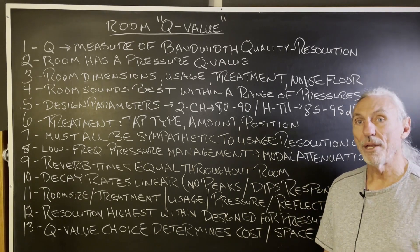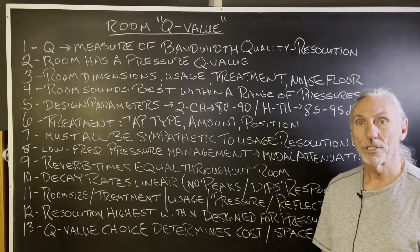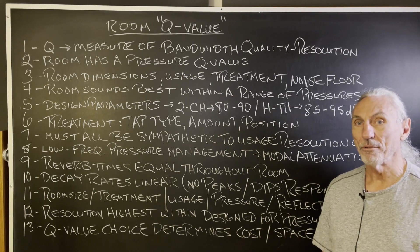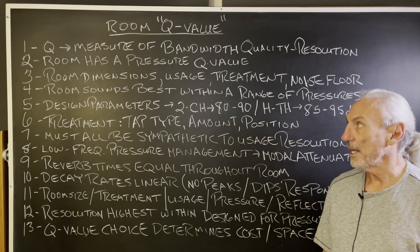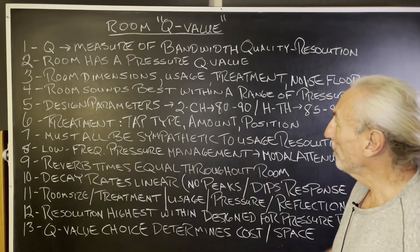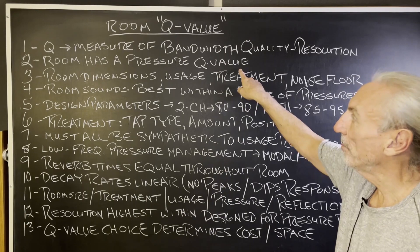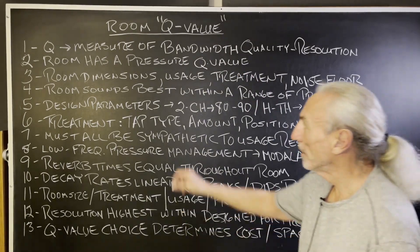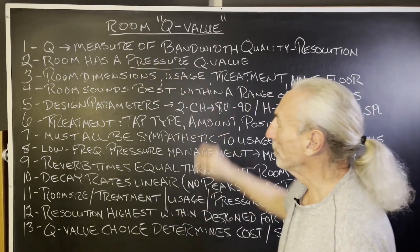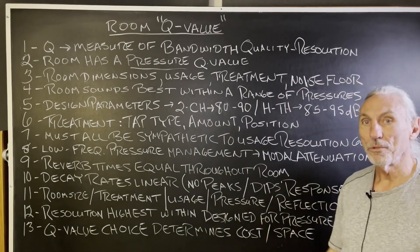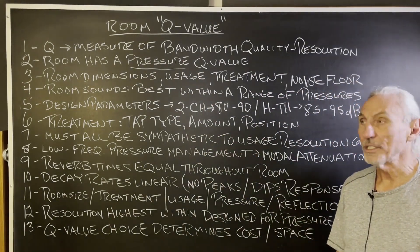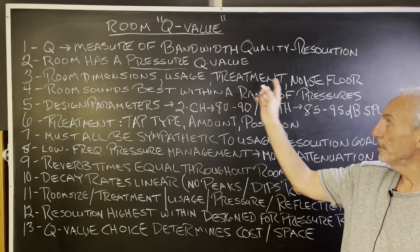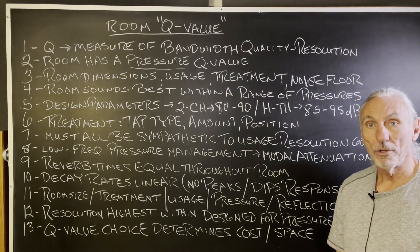If you don't get the low end right first, you're never going to really have a balanced middle and high frequency presentation. So you want to make sure that the Q value — the quality of the low end pressure — is addressed first and foremost. What do we use to address that issue? Room dimensions, usage, treatment, noise floor.